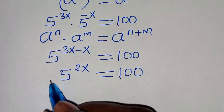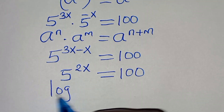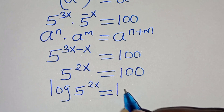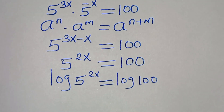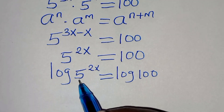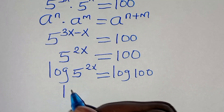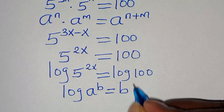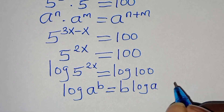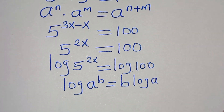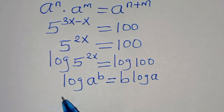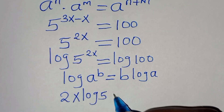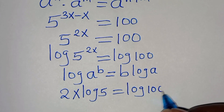To solve for the value of x, we introduce logarithm on both sides: log of 5 to the power of 2x equals log 100. Now log of 5 to the power of 2x is in the form of log a to the power of b, which we can express as b times log a. Applying this power property, 2x log 5 equals log 100.